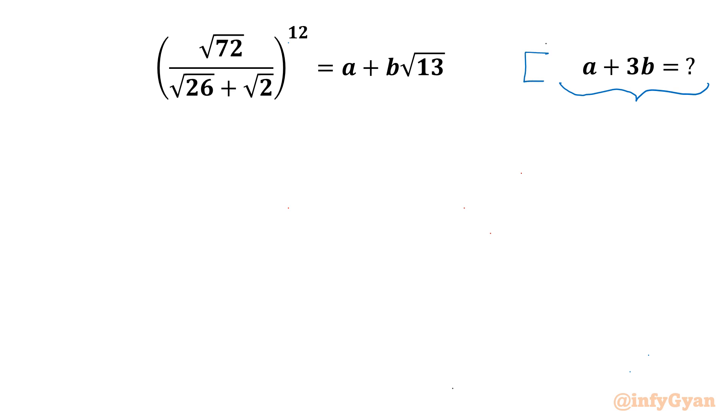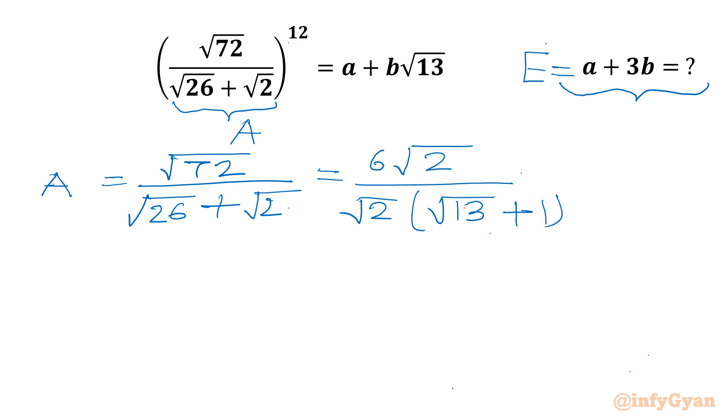So let's get started by considering required expression e and this bracket a. Let me simplify a separately. So a will be equal to square root 72 divided by square root 26 plus square root 2. Now I can write root 72 as 6 root 2. In denominator it is root 2 common. In bracket I can write root 13 plus 1. Now we can cancel root 2 and root 2. So a is nothing but 6 over root 13 plus 1.